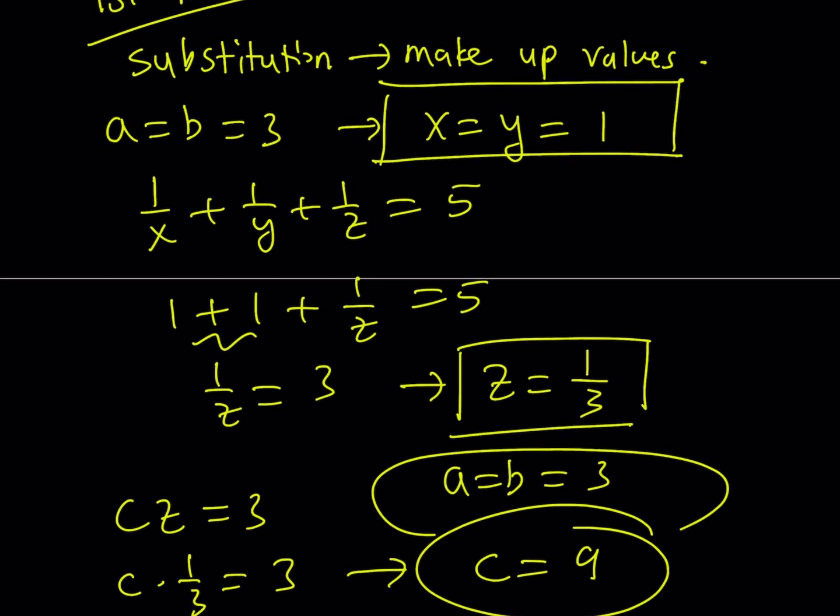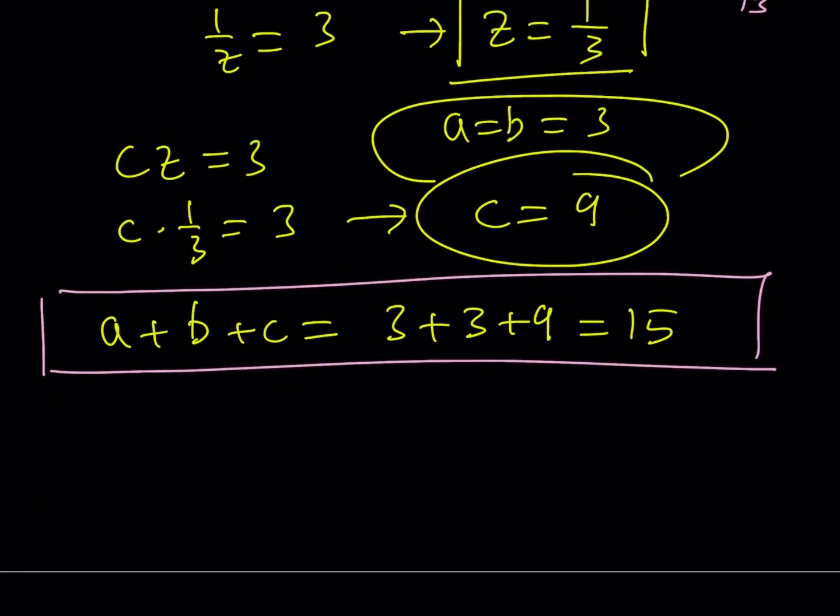Again, if you made up different values, you can easily test it out. I mean, it's not too hard to test. But if you pick, for example, A equals B equals one, then you would get X and Y would be both three. And then by substitution, you're going to get two-thirds. Five minus two-thirds is going to give you, you know, 13-thirds. And reciprocal of that would give you Z, which is three-thirteenths. And from here, you can just find the C value and so on and so forth. Guess what? You're going to get the same answer.